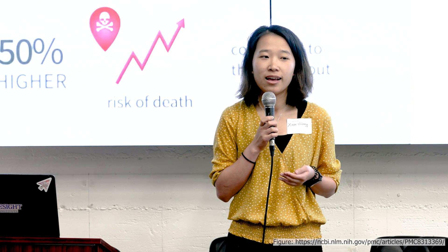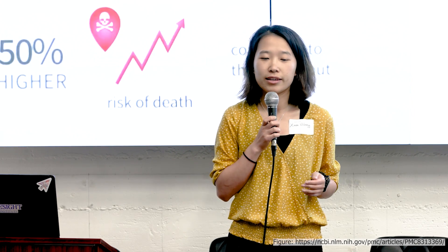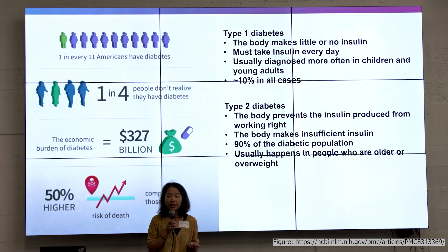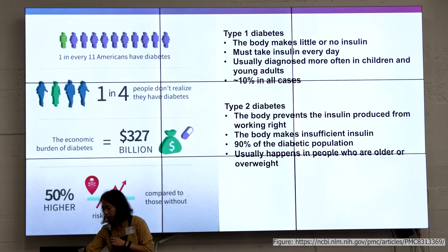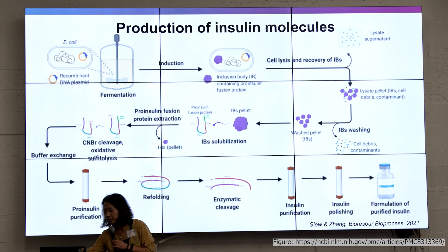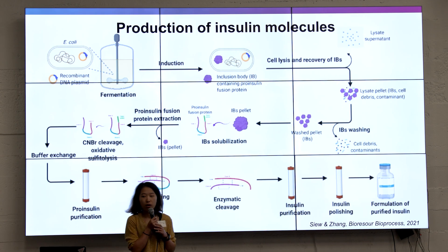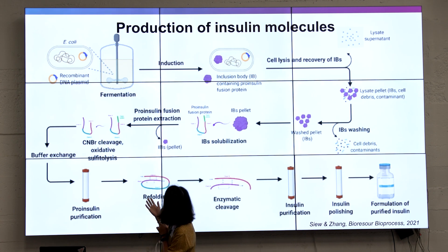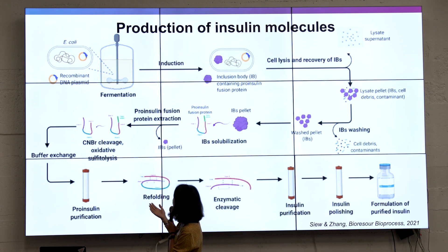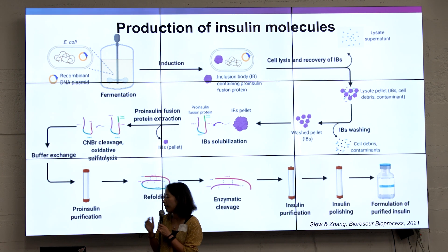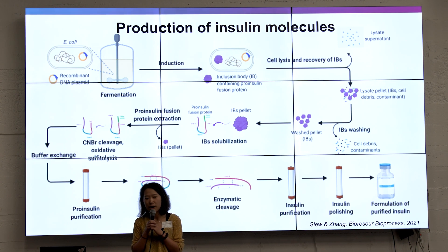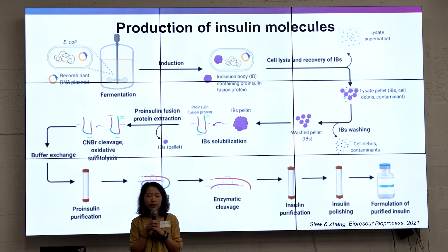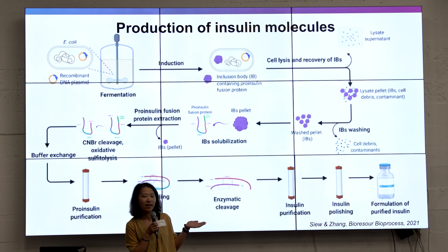There's a really high cost of insulin in many countries, especially in low and middle income countries. Here is a diagram of how most insulin is produced — it's a very long process from recombinant DNA plasmid to the final product. Because of the high cost, there's actually a program called Open Insulin. People are trying to come up with a protocol to make insulin at home, but this is not something you can easily DIY.